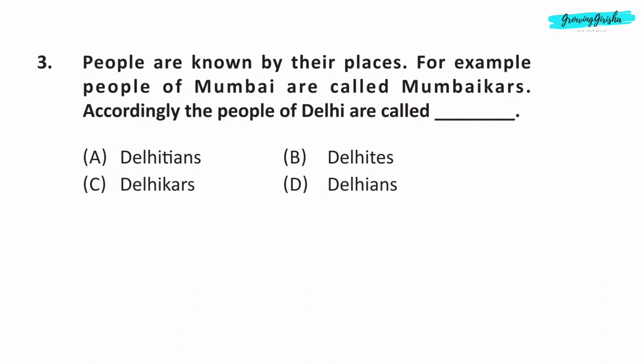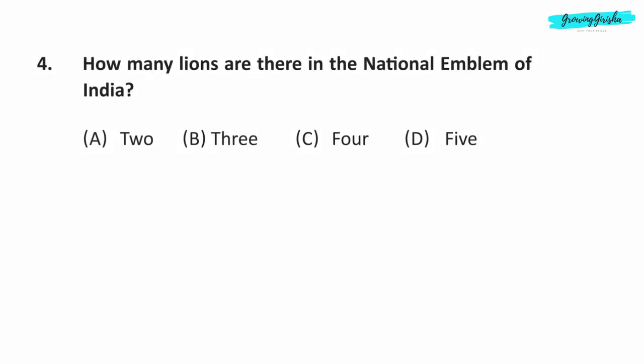Question 3. People are known by their places. For example, people of Mumbai are called Mumbaikers. Accordingly, the people of Delhi are called — Option B: Delhiites.